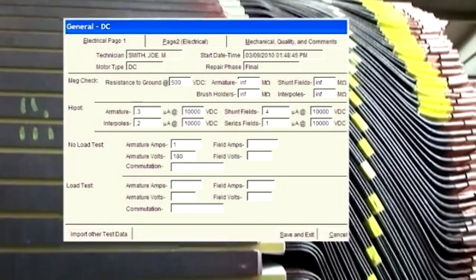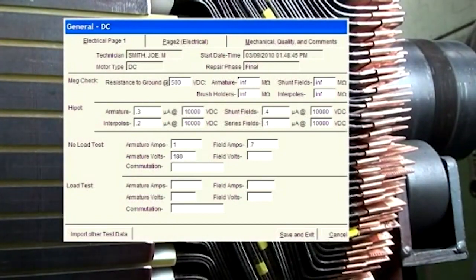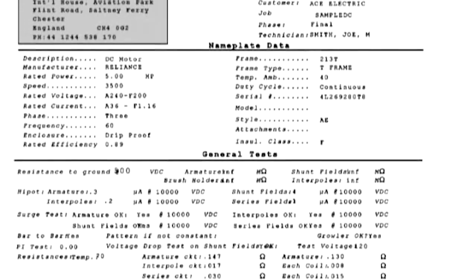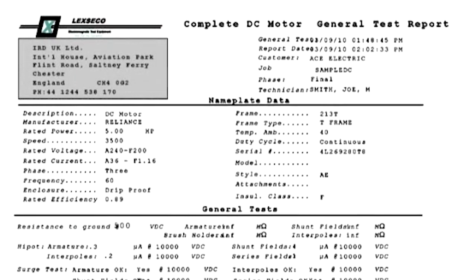The Lexico software also includes a winding verification program which provides a method of calculating winding data. The Lexico core loss tester provides a convenient and comprehensive general test report on any unit in hard copy format.